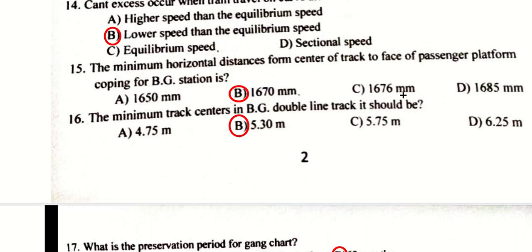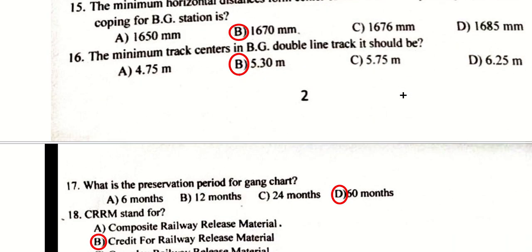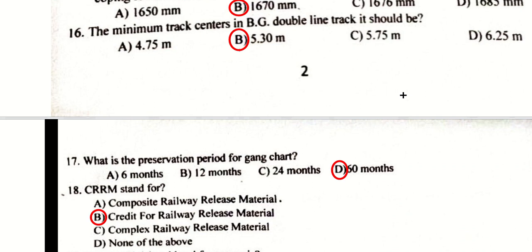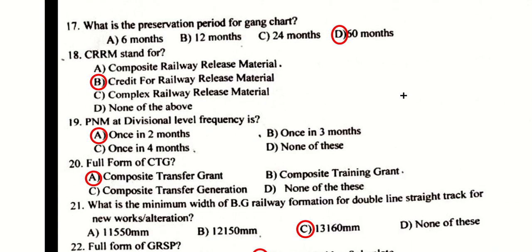The minimum horizontal distance from the center of track to the face of passenger coping for a BG station is option B — 1670 mm. The minimum track center in BG double line track should be 5.30 meters. The preservation period of the gang chart is five years, that is 60 months, so option D is the right answer.